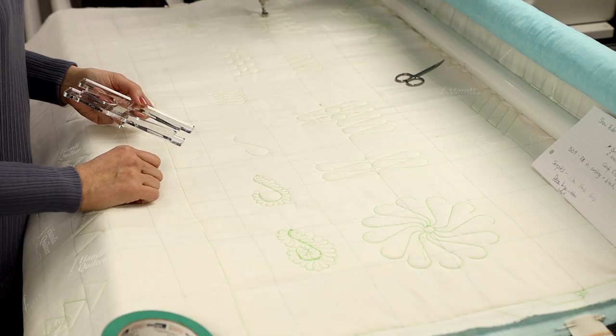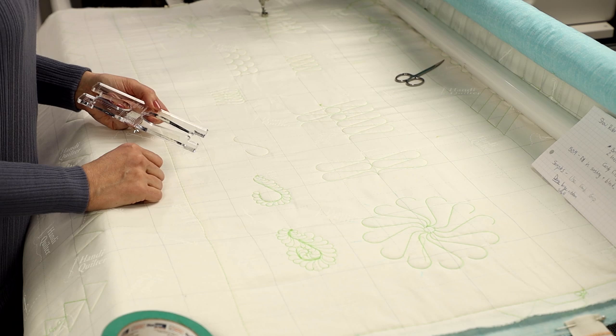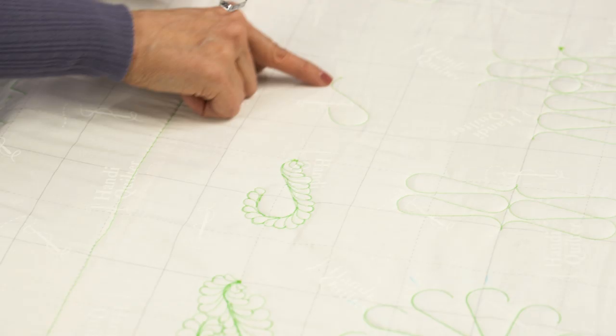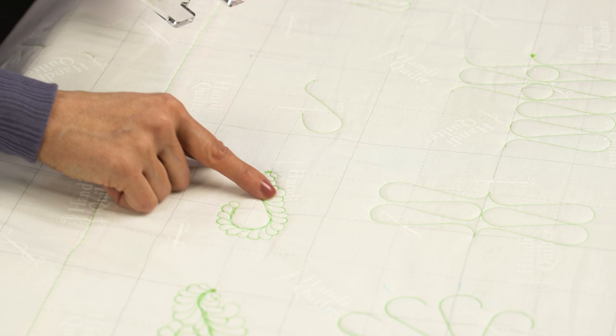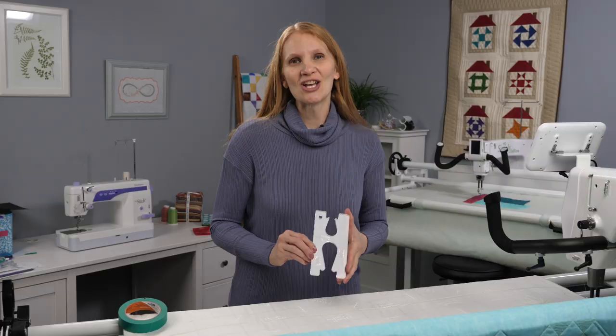One other thing you can use the candy ruler for is to make a spine. I just did a basic spine, and then I added feathers along one side, and then I added feathers on the other side. So this candy ruler can be used for a variety of things.